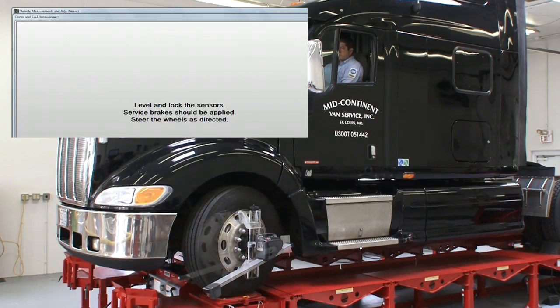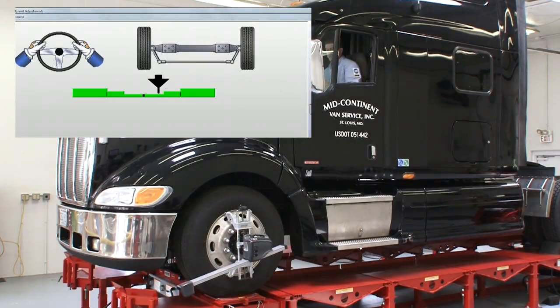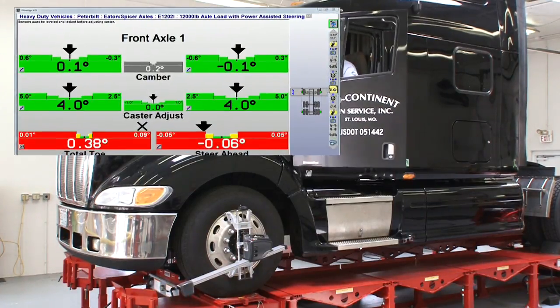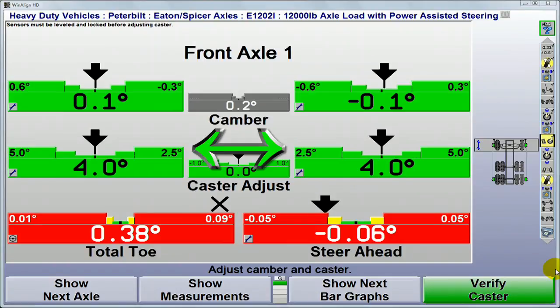The steering axle is next. Caster is measured, readings are stored, and then displayed. On this axle, caster and camber are well within tolerance, but toe is not. This is a very common condition.